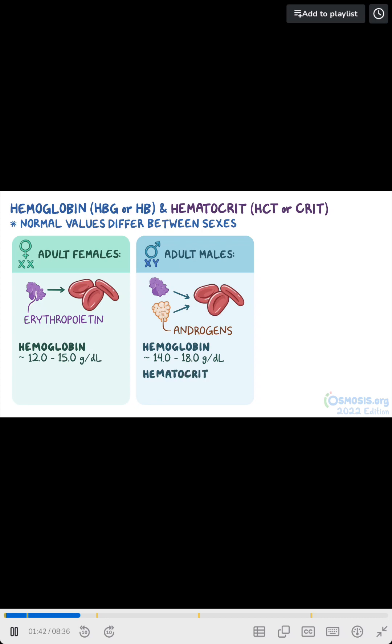Hematocrit in males ranges from 41.0% to 51.0%, while in females it ranges from 36.0% to 45.0%.